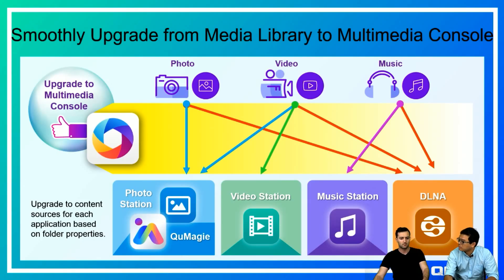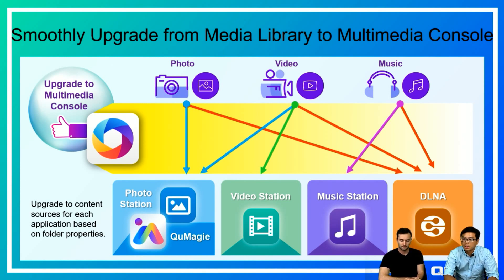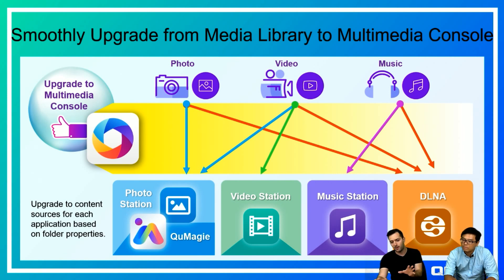After you set a folder as a common source — for example for QMAG — the multimedia contents in that folder will be visible in QMAG. Here we show how we upgrade from media library to multimedia console. If a folder was assigned as a photo folder, after the upgrade it will be assigned as a content source for Photo Station or QMAG. This diagram shows how it operates from media library to multimedia console, so no one should be confused.